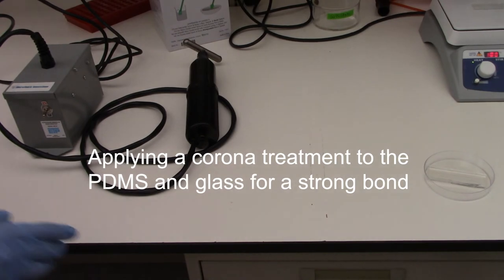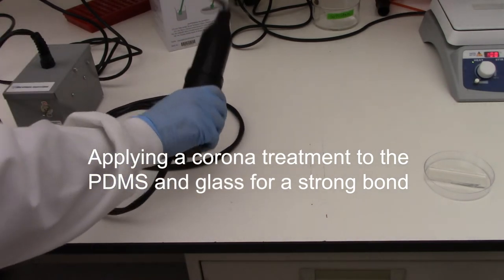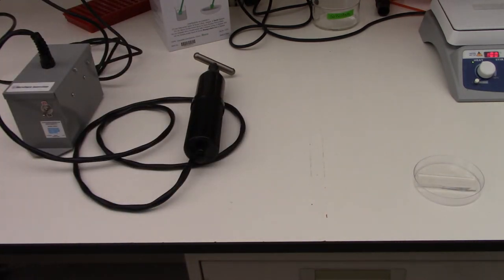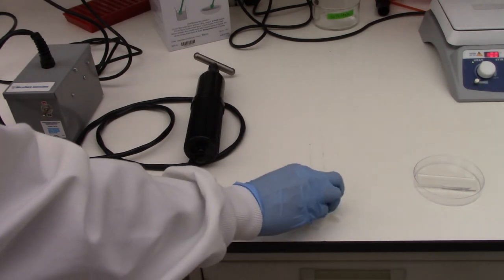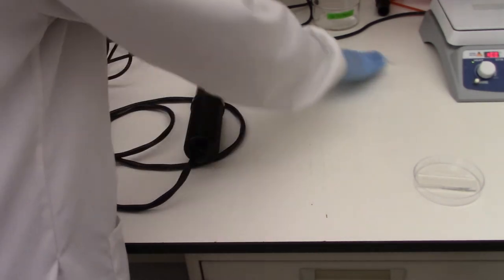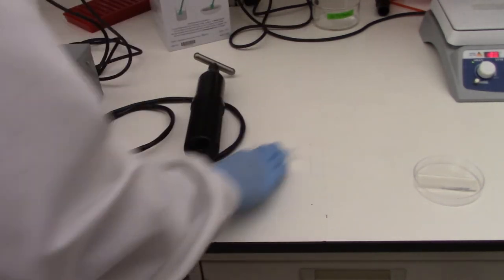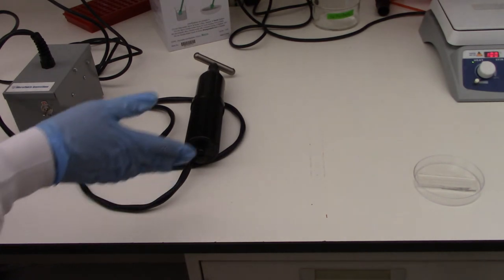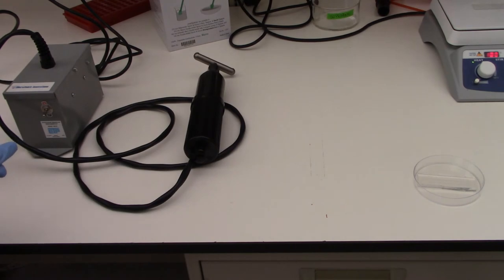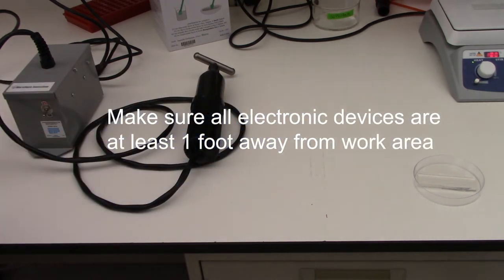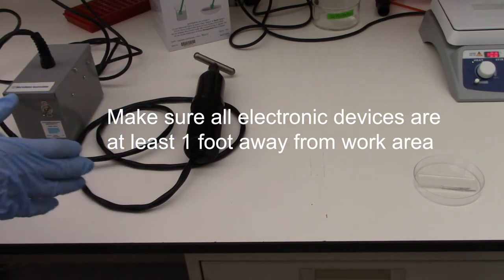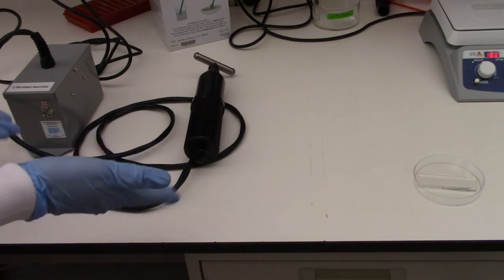So next we're going to use this plasma wand to bond our PDMS chip to our glass slide. To get started with this process, the first thing we do is take some solvent like isopropanol or ethanol and clean our workstation. And we want to do this on a clean surface. And then the next thing we'll do is make sure that all electronic devices and any metal objects are not in your workstation, as the plasma can interfere with some electronics and also the metal messes up the process.